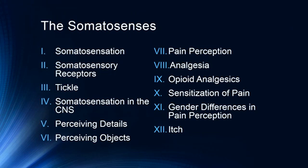Here's what we're going to talk about today. We'll first talk about what somatosensation is and the different kinds of somatosensation. We'll then talk about the different somatosensory receptors, tickling and why you can't tickle yourself, somatosensation in the central nervous system, perceiving details versus perceiving objects, pain perception, relieving pain through analgesia, different types of opioid analgesics — an important topic given the current epidemic of opioid overdose and abuse. We'll talk about sensitization of pain, gender and sex differences in pain perception, and finally itching and its relationship to pain.